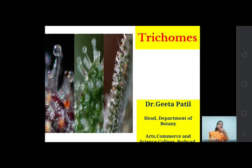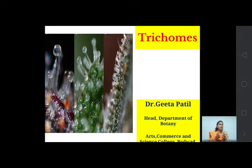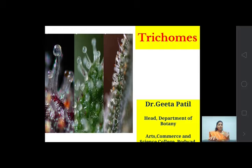The cells in the epidermis are compactly arranged. If there were intercellular spaces, anything could enter or exit. To avoid this, cells are arranged compactly, and their outer cell wall and radial adjacent cell walls are somewhat thicker than the inner cell wall, because they face the outer atmosphere.